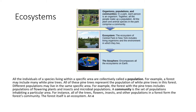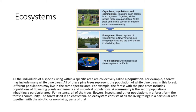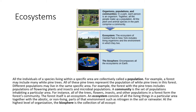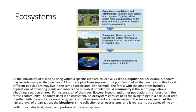The forest itself is an ecosystem. An ecosystem consists of all the living things in a particular area, together with the abiotic, or non-living, parts of that environment, such as nitrogen in the soil or rainwater. At the highest level of organization, the biosphere is the collection of all ecosystems, and it represents the zones of life on earth. It includes land, water, and portions of the atmosphere.